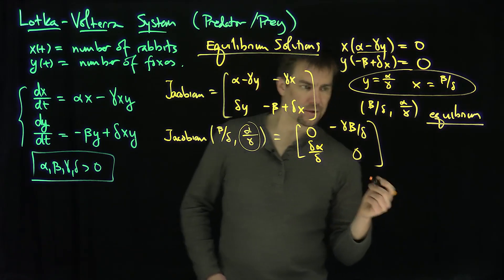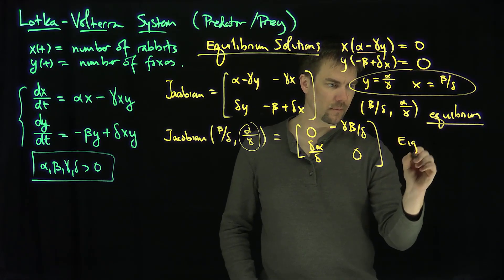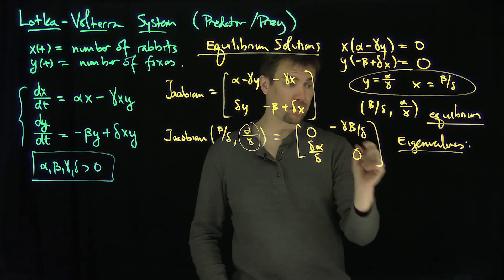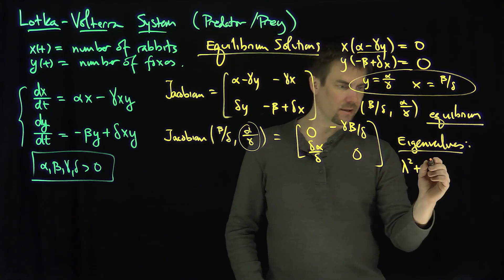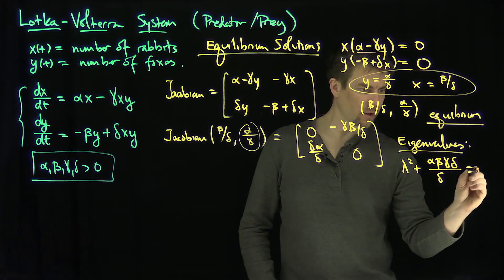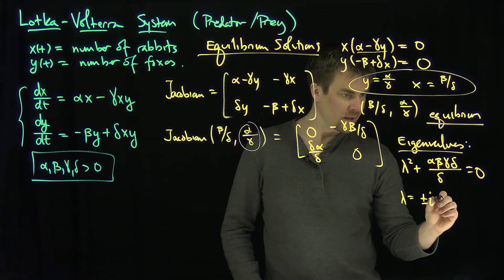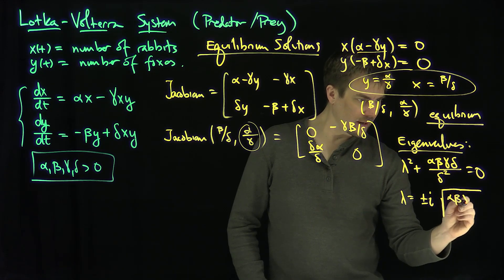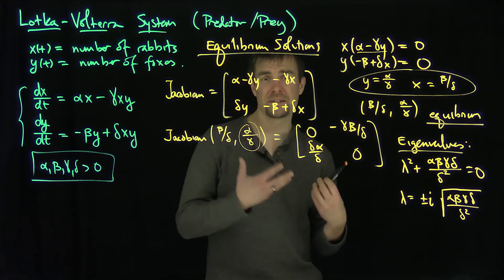Now we examine the spectrum of this matrix. The eigenvalues satisfy lambda squared plus alpha beta gamma delta over delta squared equals zero. The solutions are purely imaginary: lambda equals plus or minus i times the square root of (alpha beta gamma delta over delta squared). The linearization fails because the real part of these eigenvalues is zero, so we need another approach to examine what's happening at this equilibrium.